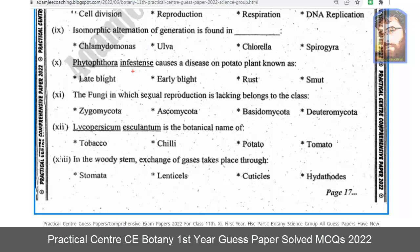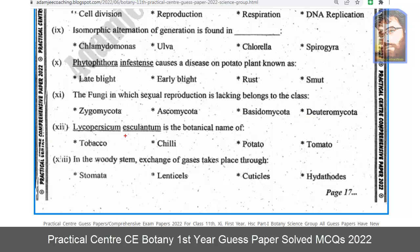Number ten: Phytophthora infestans causes a disease on potato plant known as late blight. Number eleven: the fungi in which sexual reproduction is lacking belongs to the class Deuteromycota. Number twelve: Lycopersicum esculentum is the botanical name of tomato. In the woody stem, exchange of gases takes place through lenticels.